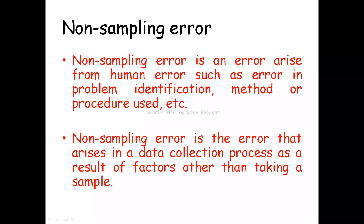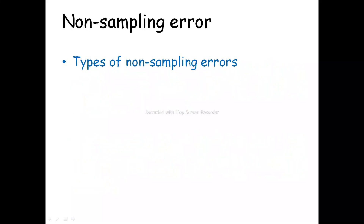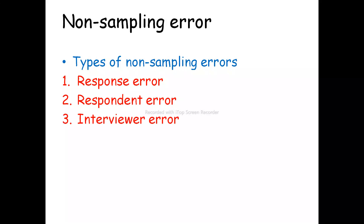Non-sampling error is an error that arises from human error, such as errors in problem identification or method or procedure used. It is the error that arises in a data collection process as a result of factors other than taking a sample — it may arise in the processing of data. Non-sampling errors are of three types: response error, respondent error, and interviewer error.